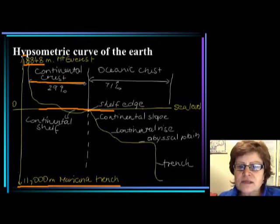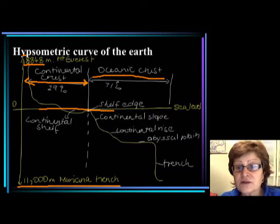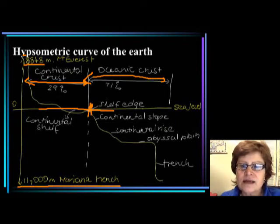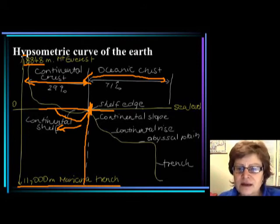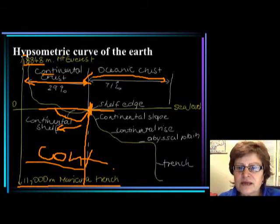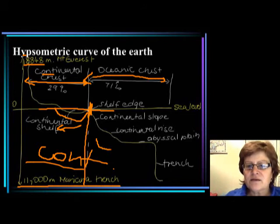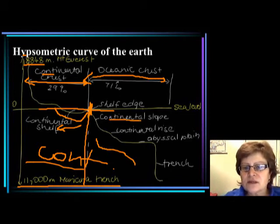The continental crust covers twenty-nine percent of earth and the oceanic crust is seventy-one percent. The continental crust actually goes all the way to the edge of the continental shelf, so the continental shelf area belongs to the continent — underneath here everywhere we have continental crust. You also need to know this area: we have the continental slope, the rise, the abyssal plain, and the deepest part is the trench.